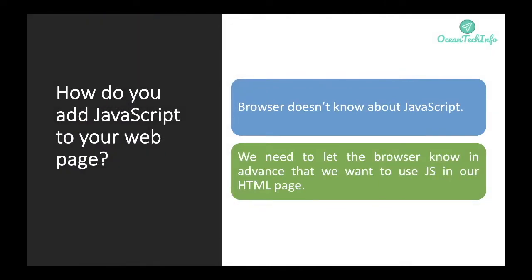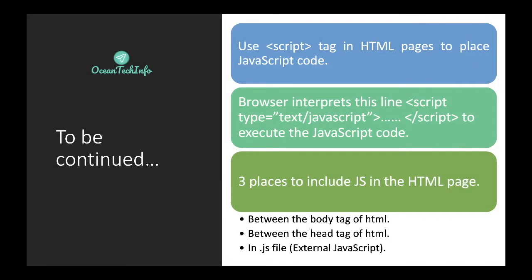How do you add JavaScript to your web page? Basically, a browser doesn't know about JavaScript unless we tell it. We use the script tag in HTML pages to place JavaScript code, and the browser interprets the script tag to execute JavaScript. There are three places you can include JavaScript code in your HTML page: between the body tag, between the head tag, and in an external JavaScript file with a .js extension.